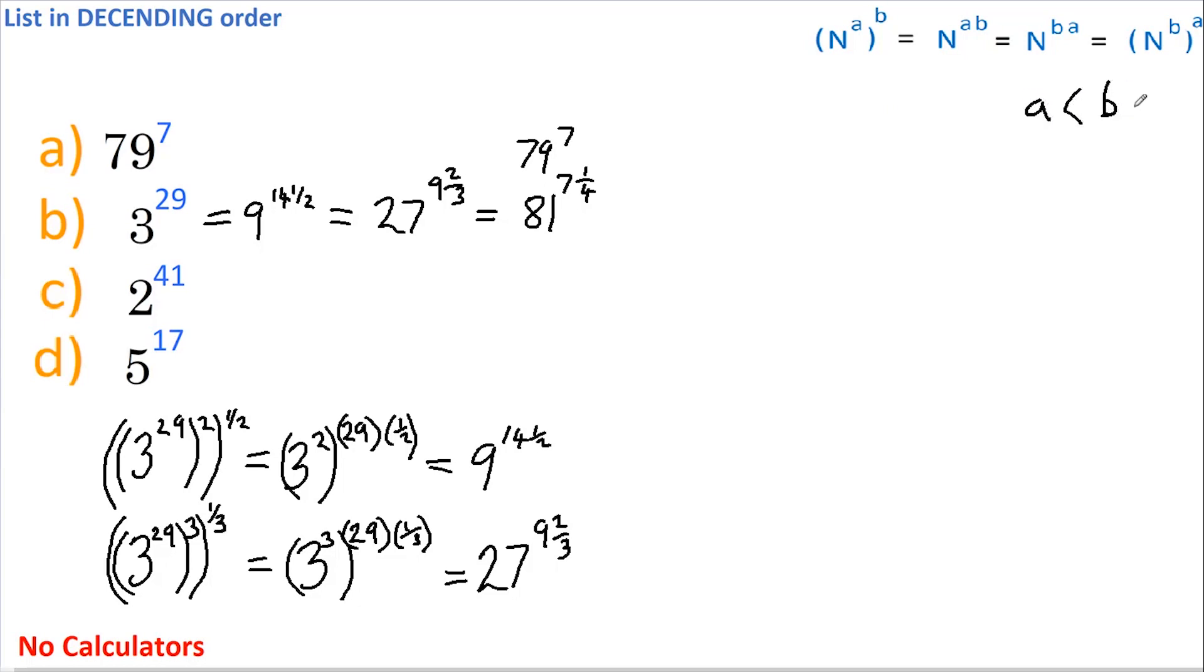Now if we look at c, we can do a similar thing. If we cube this then take the cube root, that's the same as cubing 2, which is 8, and multiplying 41 by a third, which is 13 and 2 thirds. Once again, as the base and the power of c are less than b, then c must also be less than b.